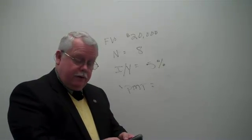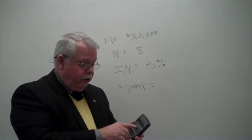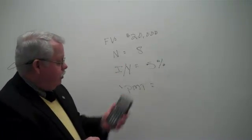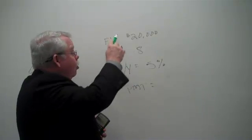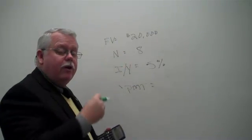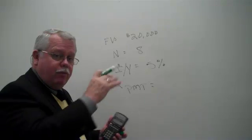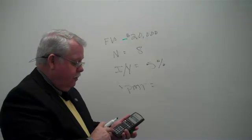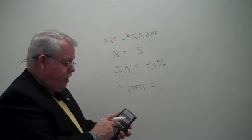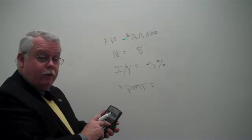The first thing we do, right, clear the memory registers, clear the TVM. And now I'm going to put this in. And what do we want to remember? Either the payment or the future value, one or the other has got to be a negative number, just like present value, future value. I'm going to make this my negative number. So I'm going to take $20,000 as a negative and put that in for my future value.